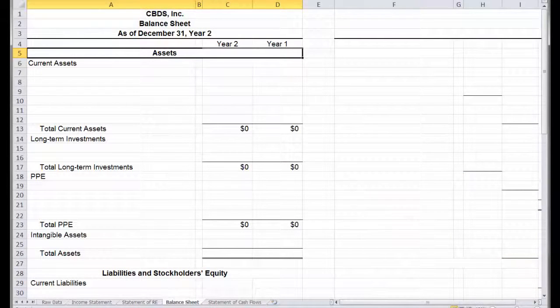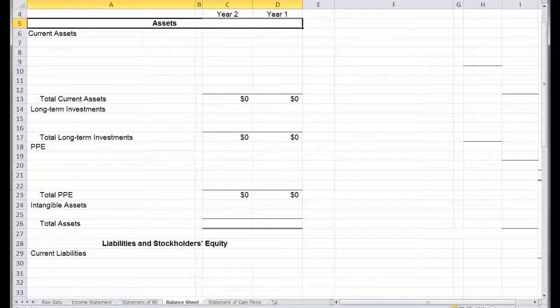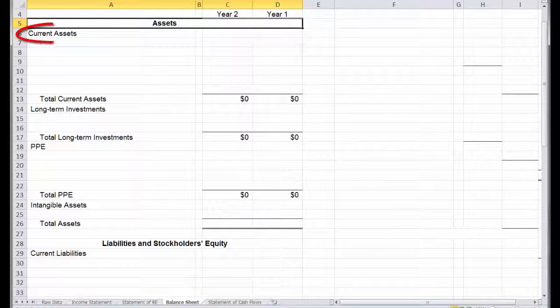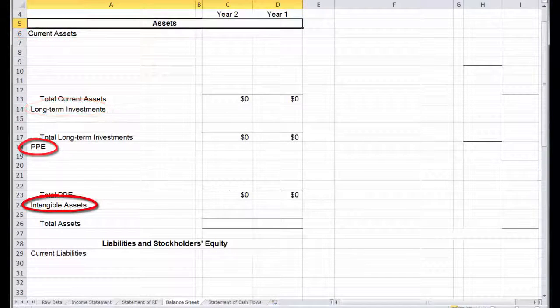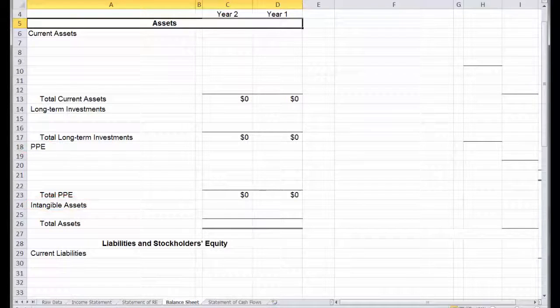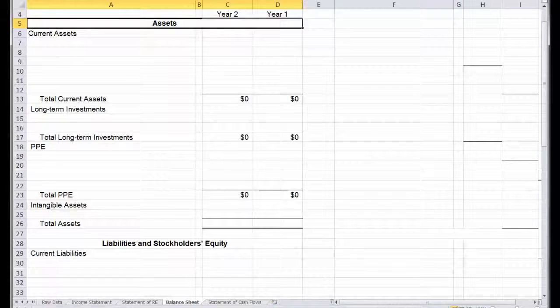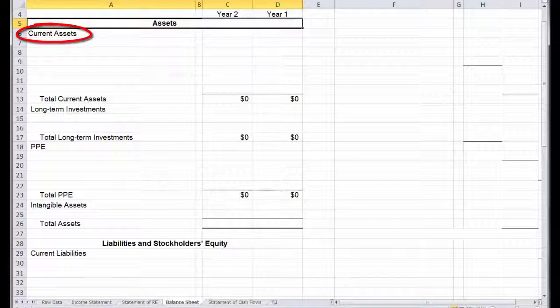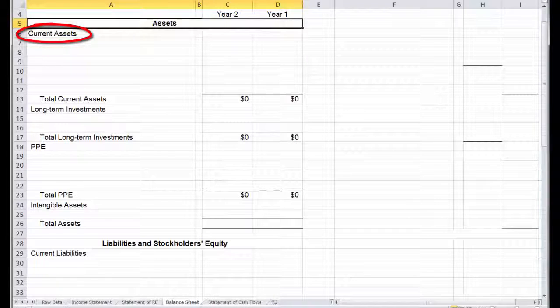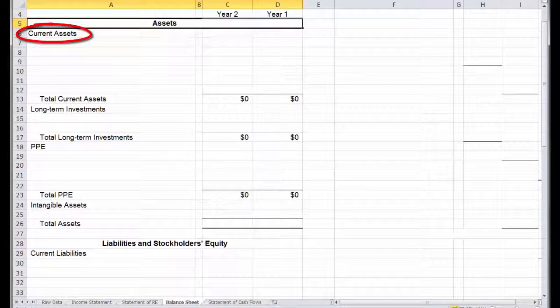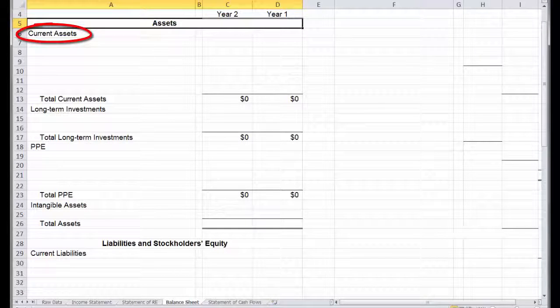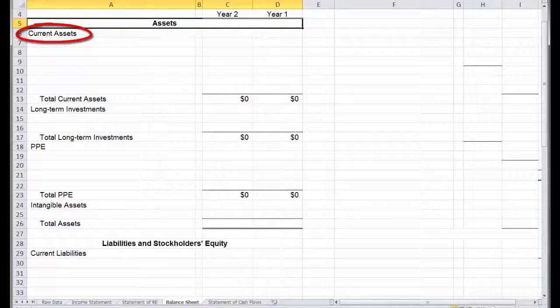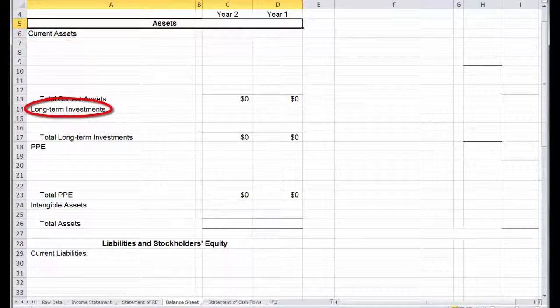As you scroll through here, you can see that I've also broken down our assets section into several different topics: current assets, long-term investments, PP&E, intangible assets, and the one I didn't put in here was other assets. Current assets are the things that we're going to use within one year or operating cycle of our business. This is the stuff we're going to use up first or that we can turn into cash the fastest.